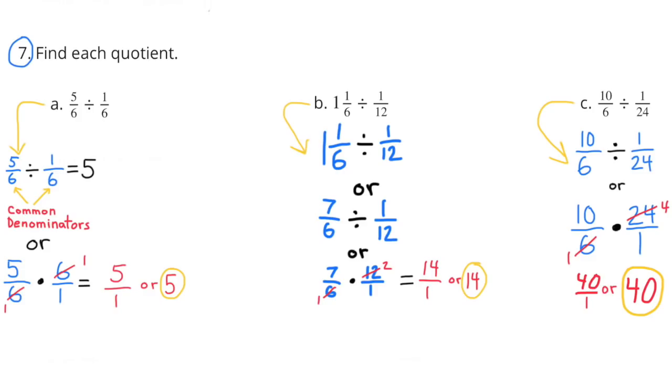Problem 7: Find each quotient. Part A: Five-sixths divided by one-sixth. This one's easy because they have common denominators. Since the bottom number's the same, we can just do five divided by one, and that equals five.